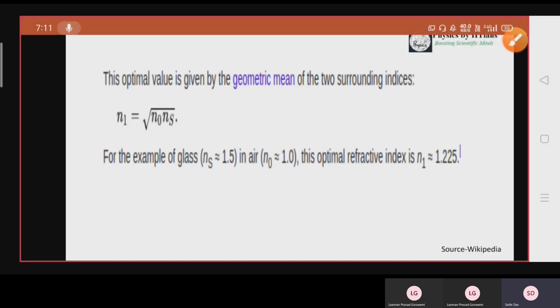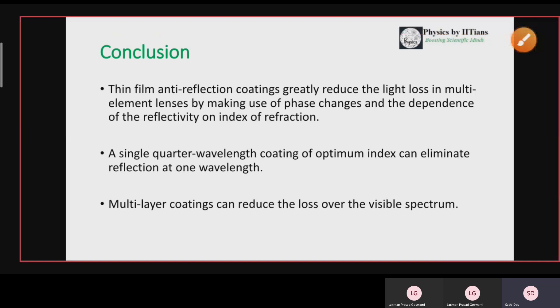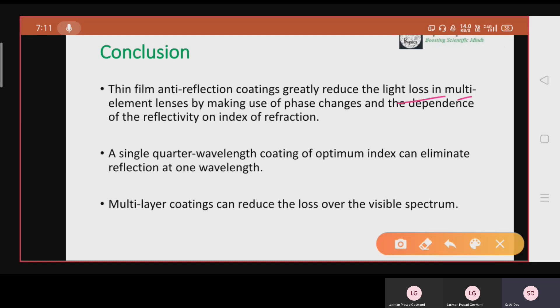So what are the conclusions? The thin film anti-reflection coating greatly reduce the light loss in multiple element lenses by making use of phase changes and the dependence of the reflectivity on the index of refraction. A single quarter wavelength coating of optimum index can eliminate reflection at one wavelength. Multi layer coatings can reduce the loss over the visible spectrum.